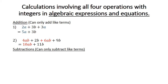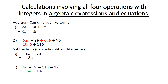Subtraction — remember, you can only subtract like terms. Negative 6ab minus 7ab: they are like terms, giving negative 13ab. 6ab minus 7c minus 11ab minus 12c equals negative 5ab minus 19c.